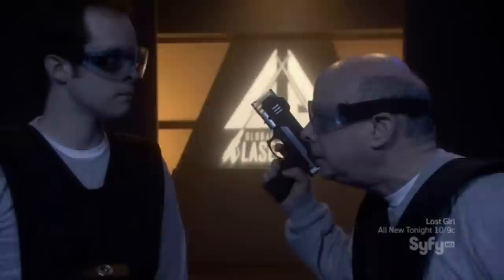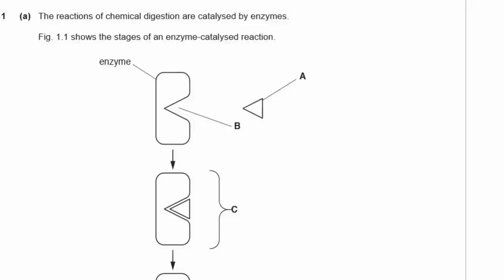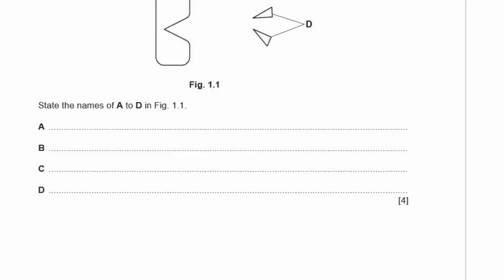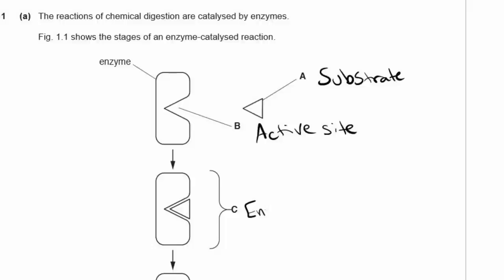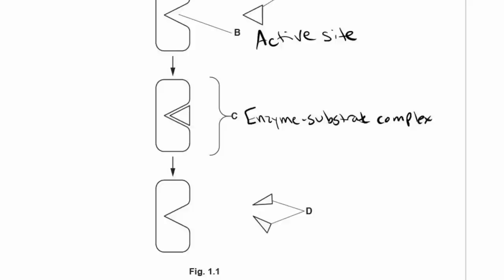Question 1a. The reactions of chemical digestion are catalyzed by enzymes. Figure 1.1 shows the stages of an enzyme-catalyzed reaction. State the names of objects A to D. A is the substrate. B is called the active site — do not label B as the enzyme because it's already been labeled as an enzyme. C is the enzyme-substrate complex. D is the products.